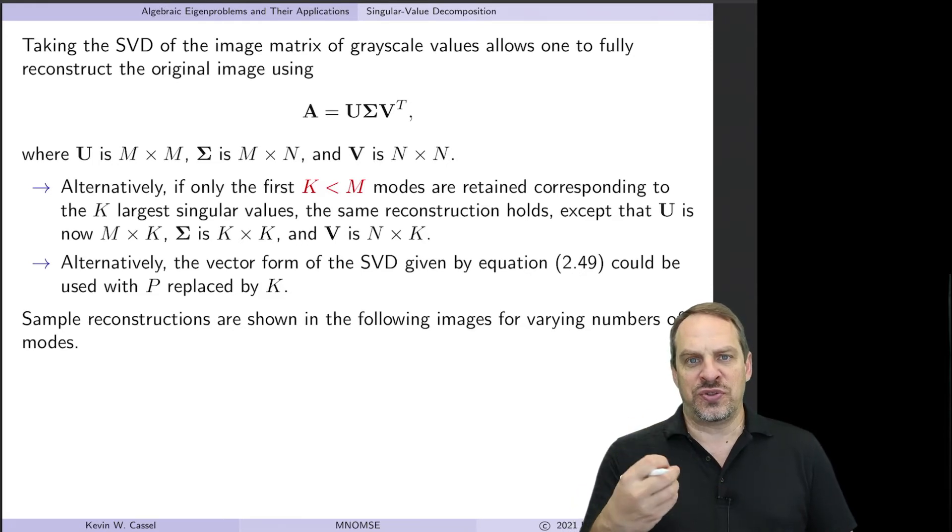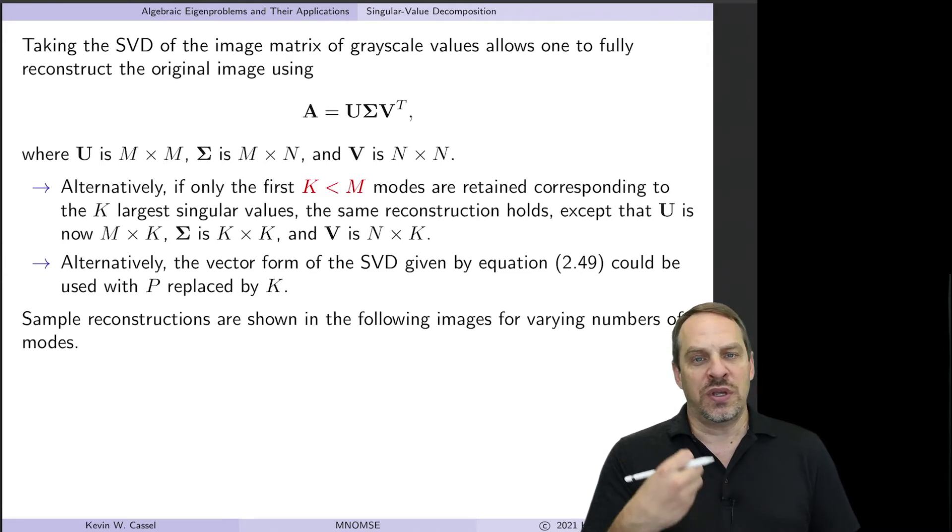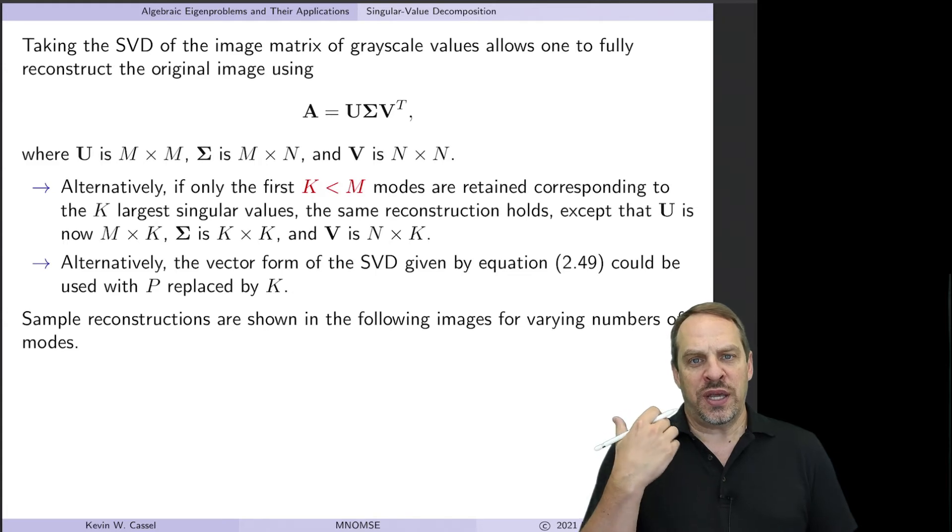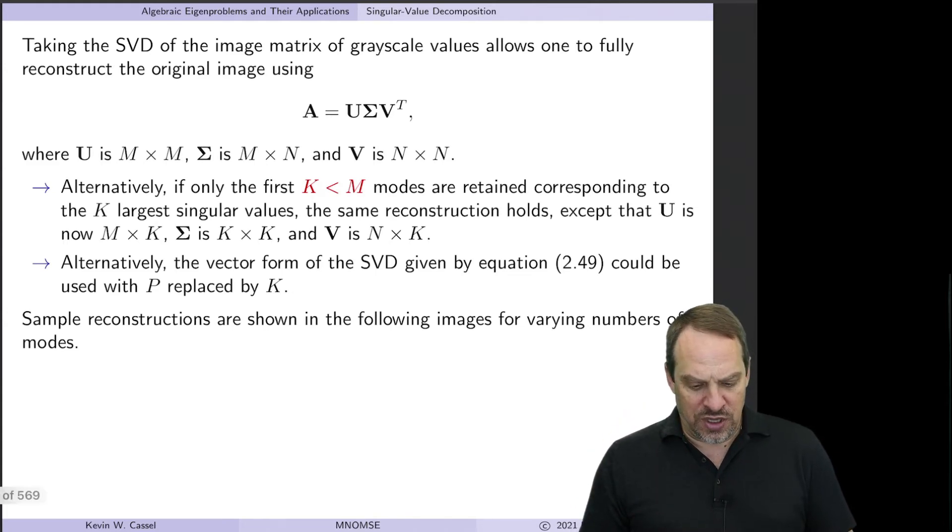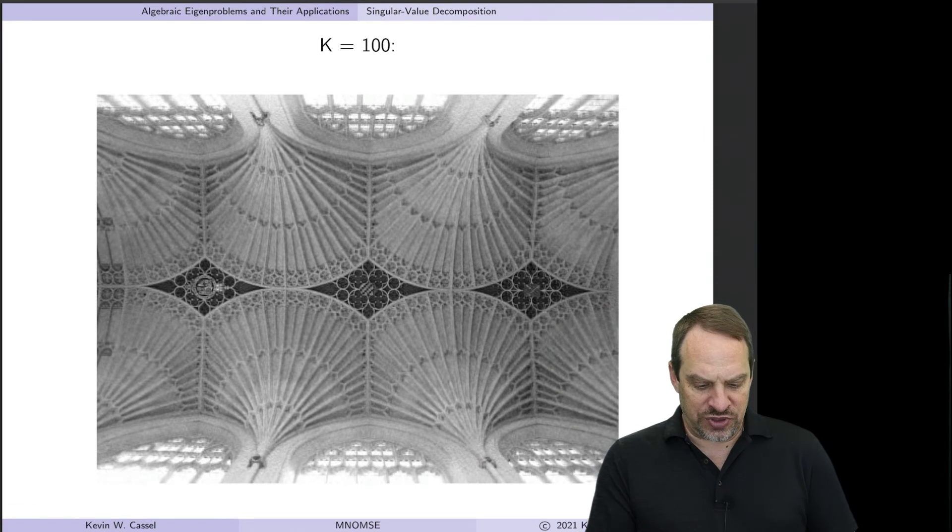So I'm just going to show you the results for different K. I did this in Mathematica. It's very straightforward to do. You do the SVD, you choose the number of modes that you want, and then you can reconstruct the A. And this is what you get. On this first example, this is for K equals 100.